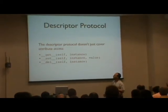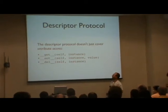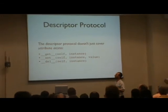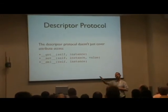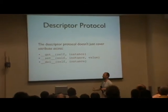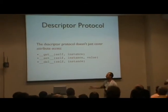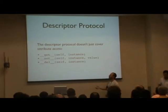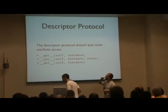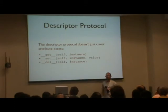This is the full descriptor protocol. We've covered __get__ as defining a descriptor, but there are actually two other methods that will also intercept things. We've got __set__, which is executed when we attempt to modify the attribute that is an instance of this descriptor object. And we've got __delete__, which is when you attempt to delete the attribute from the class.